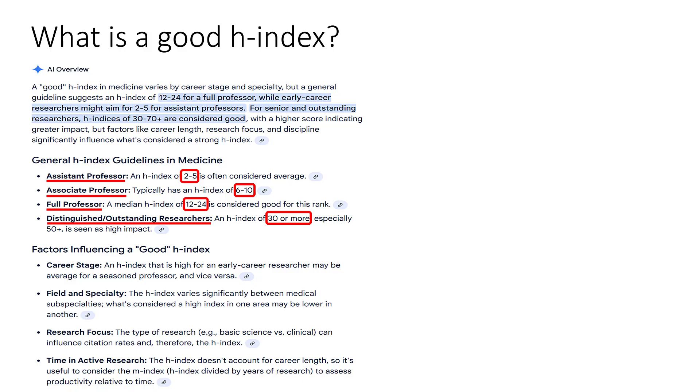Simply put, the longer you have been a scientist, the more publications you will have, and the more quoted you will be. Thus, if you want to evaluate your own H-Index, then compare this to others in your field of specialty that are at the same point in their career.